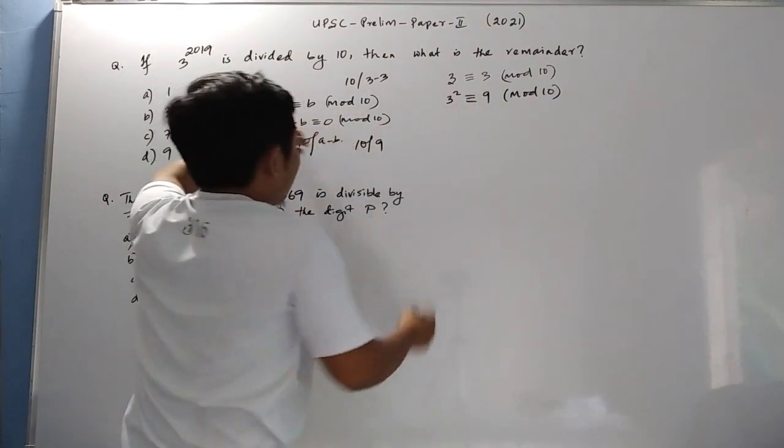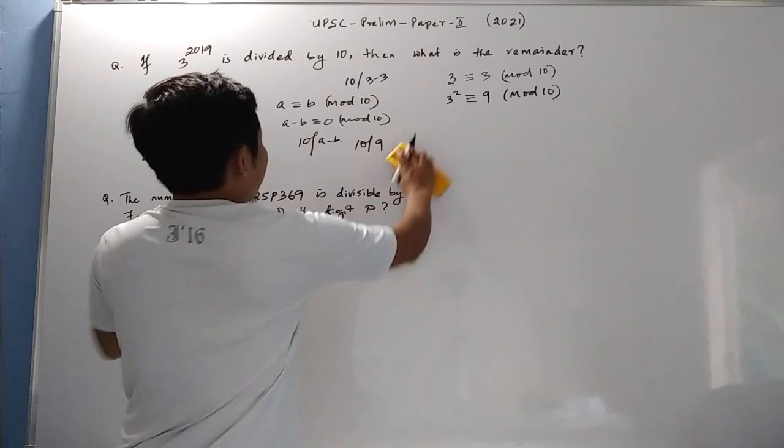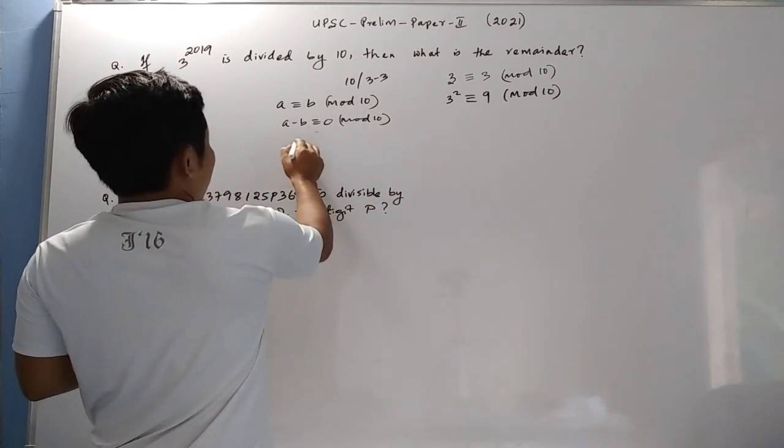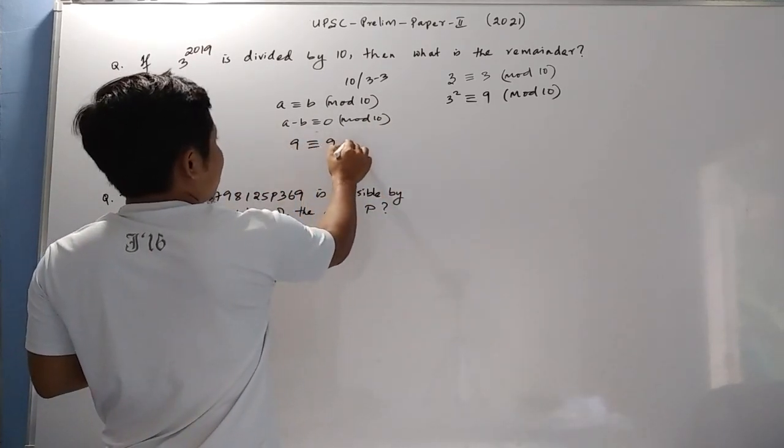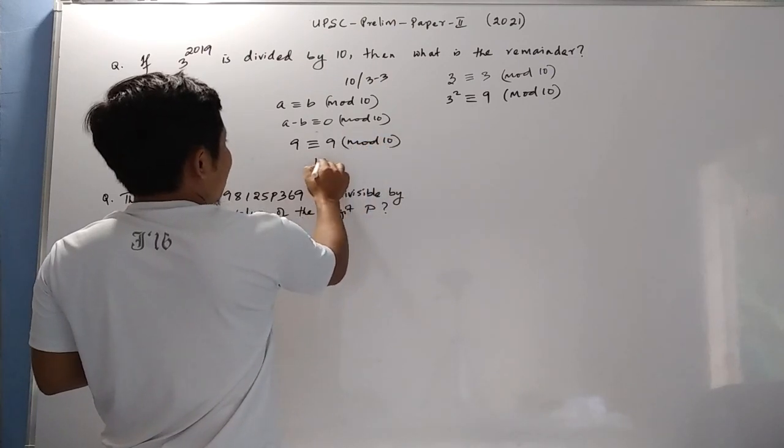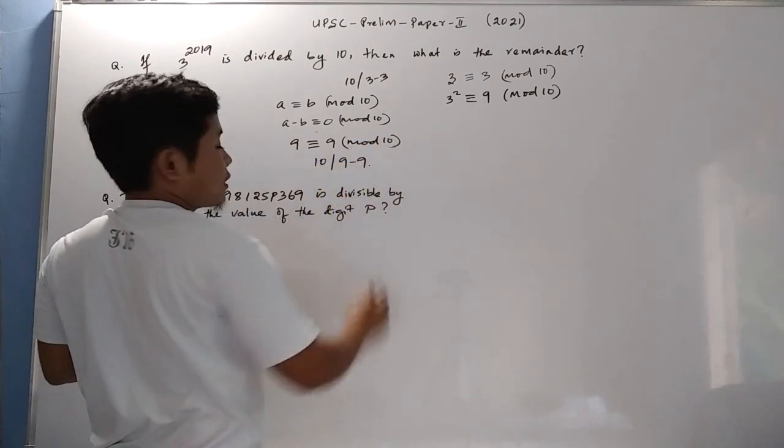So the reason I am writing 9 congruent to 9 mod 10, which means 10 can divide 9 minus 9.